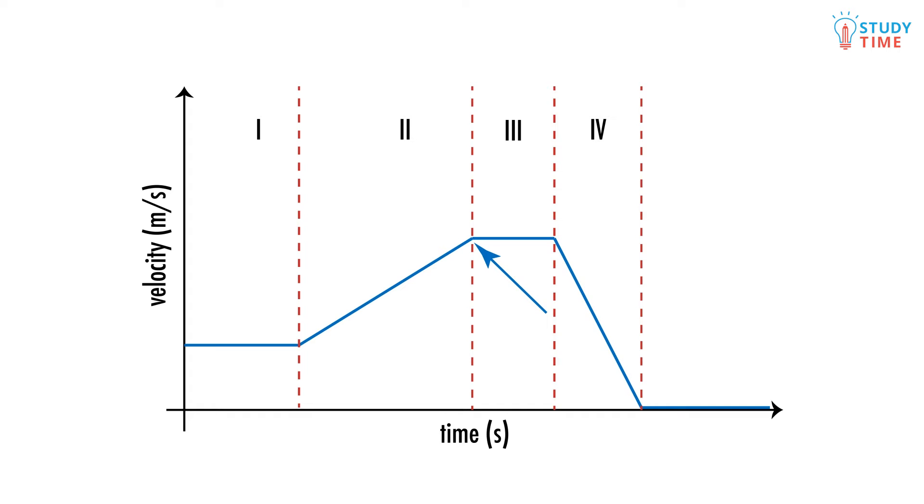In stage 3, the mountain levels out, and Holly stops accelerating. Notice how she's still traveling at the same velocity she finished stage 2 with? The difference is that she's not accelerating anymore.